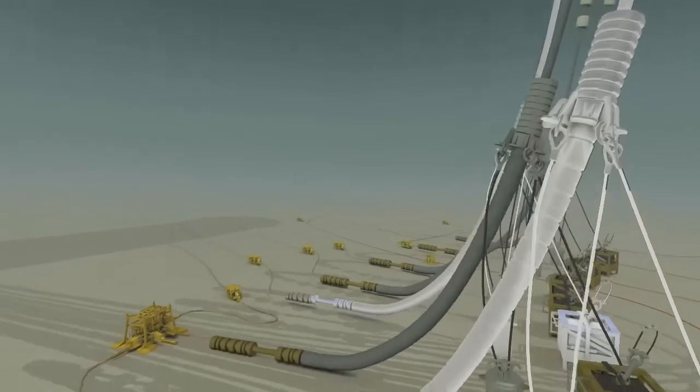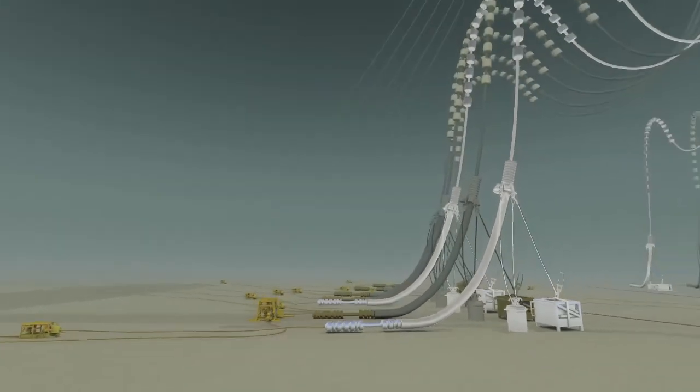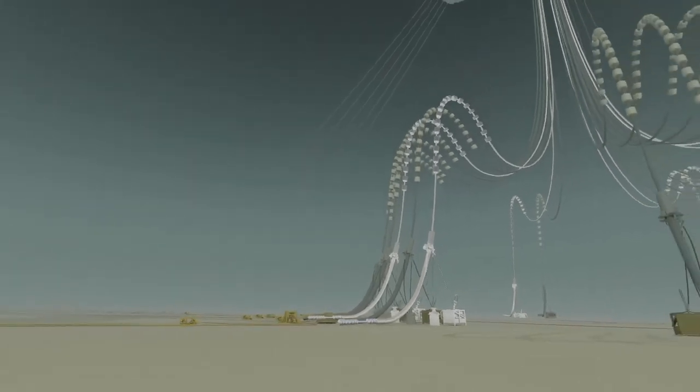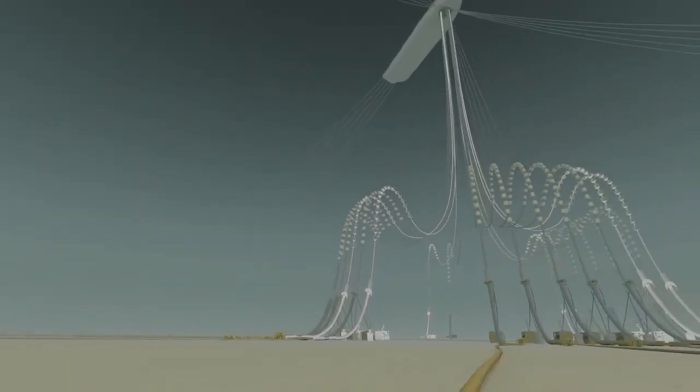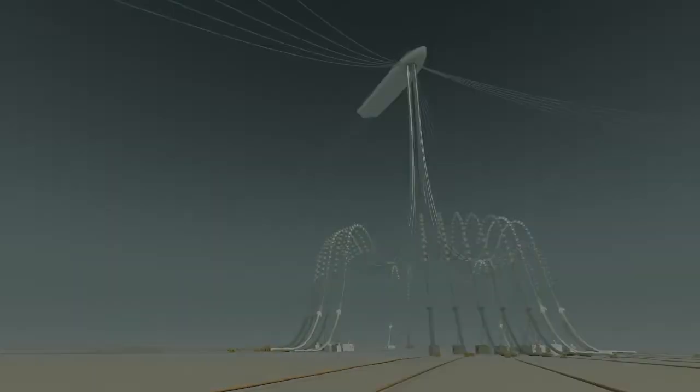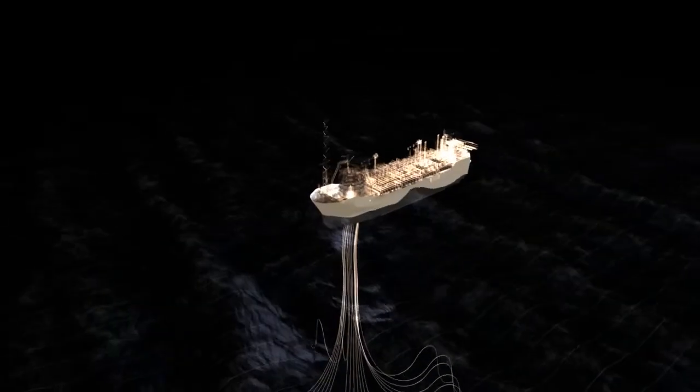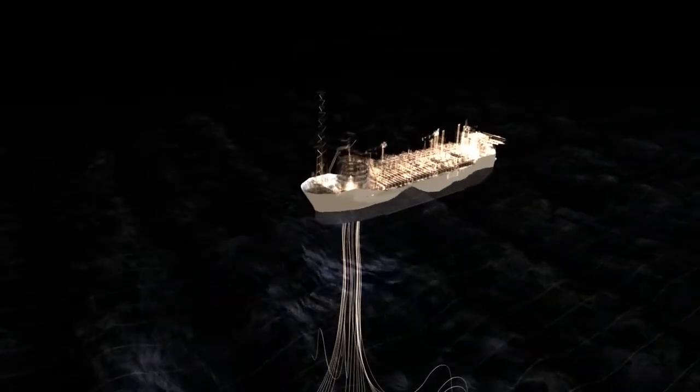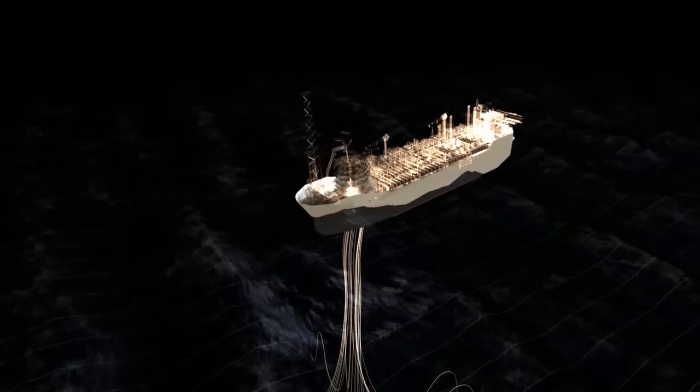This huge engineering and installation task will also allow the latitude required for the Quad 204 FPSO to operate in some of the most inhospitable conditions in the North Atlantic. With waves that regularly reach over 30 meters high, this riser flexibility is vital to ensure the ongoing production from the field.